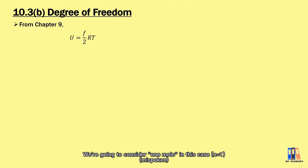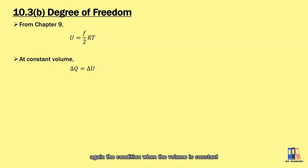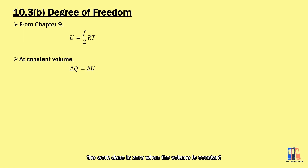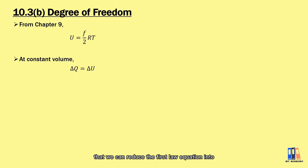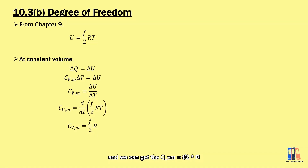The next thing to discuss is the degree of freedom. We consider one molecule. As learned in Chapter 9, the internal energy of gas can be expressed as (F/2)RT. Reviewing the constant volume condition, the work done is zero, so the first law reduces to delta Q = delta U. Substituting heat energy as C_VM dT = dU, we get C_VM = dU/dT. Substituting the equation for U, we obtain C_VM = (F/2)R.